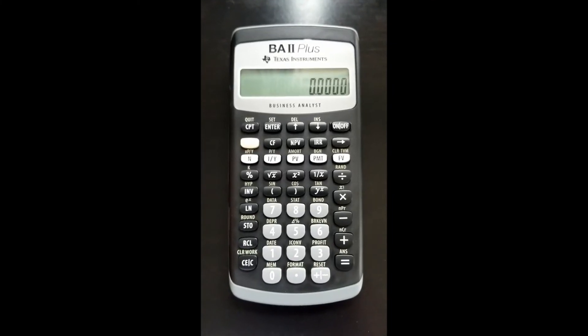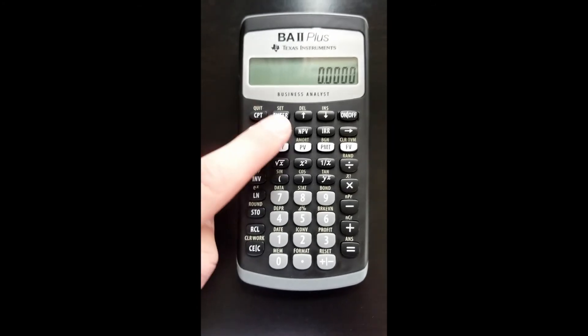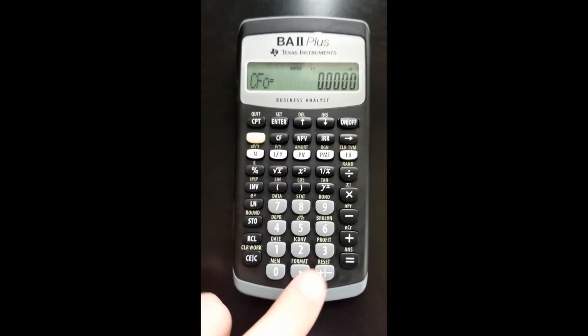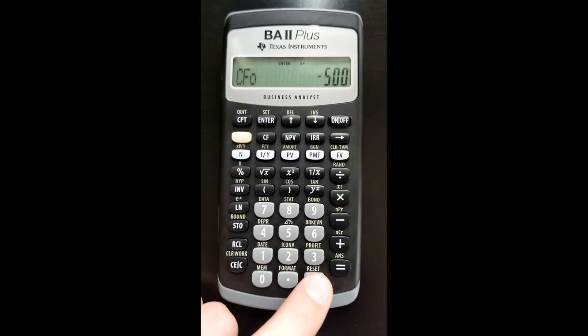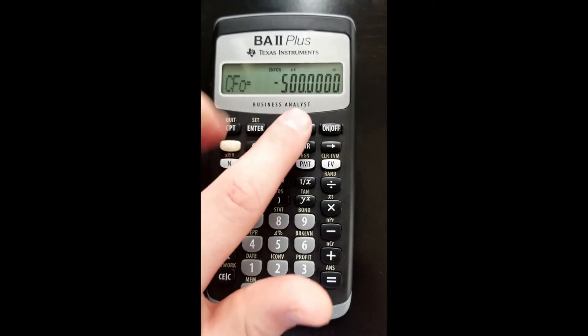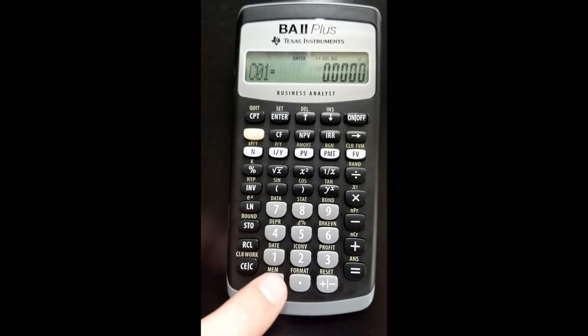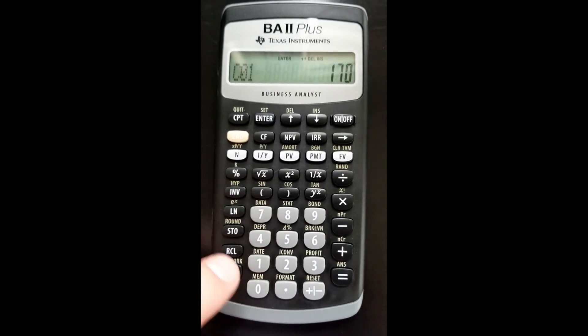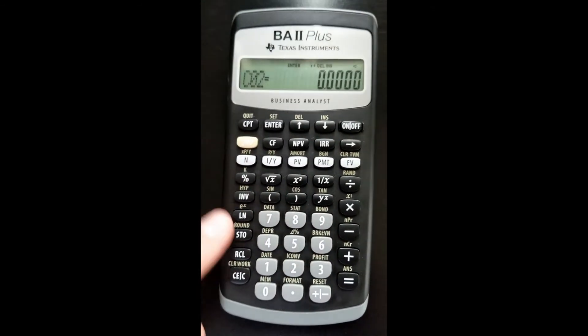This is how you calculate the NPV on your BA2 Plus. First, go to cash flow. Our first output is going to be -500, so we do 500 negative, enter, then down arrow. This is cash flow one, CO1. Here we're going to do 170, enter.